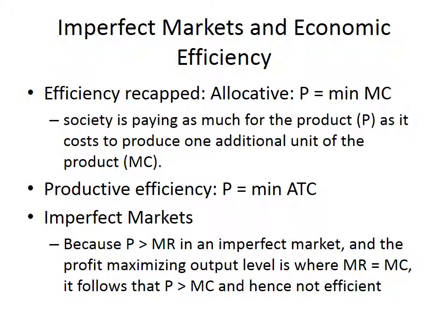First, let's look at imperfect markets and economic efficiency. We recap economic efficiency here: price equals the marginal cost, which means that society is paying for the good as much as it costs society to produce an additional unit of that good — the marginal cost. Productive efficiency is where P equals the minimum average total cost. Now, here's where we start from a theoretical basis.